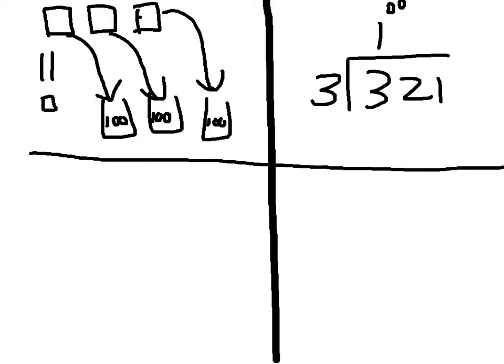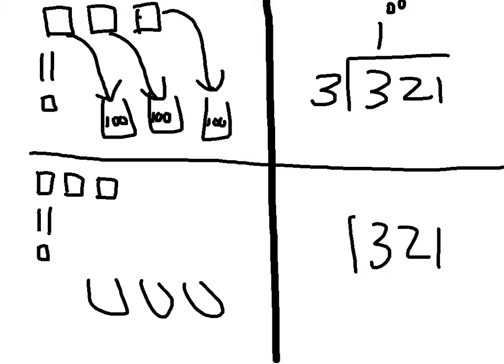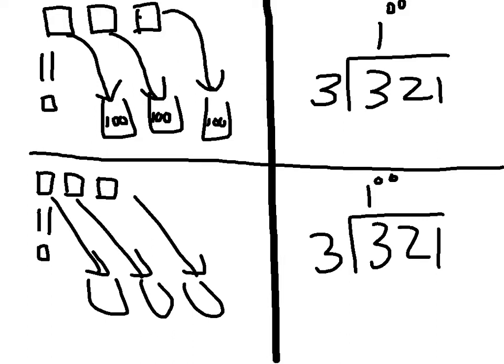The next step is basically subtracting what we already used. Since we have given these to these, then we no longer have them, so we need to cross those out.